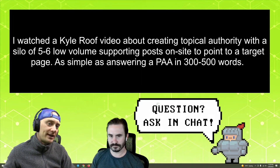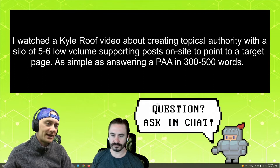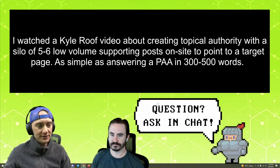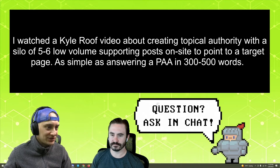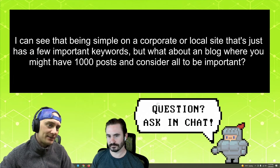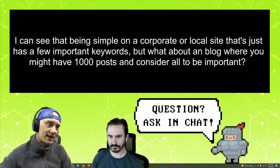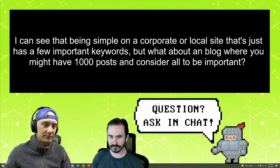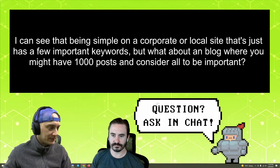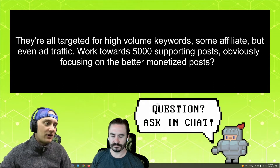I watched a Kyle Roof video about creating topical authority with a silo of five to six low-volume supporting posts on a site to point to a target page — as simple as answering People Also Ask in 300 to 500 words. Part two of the question: I can see that being simple on a corporate or local site that's just for a few more keywords, but what about a blog where you might have one thousand posts, all targeted for high-volume keywords — some affiliate, some ad traffic?